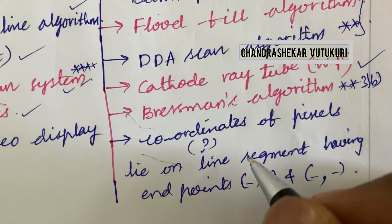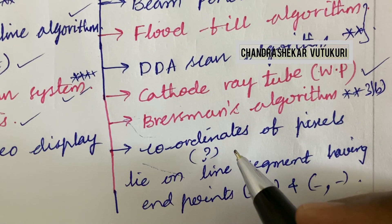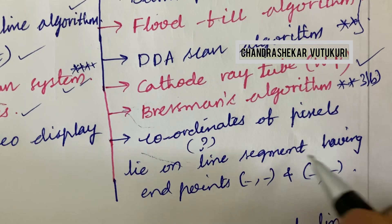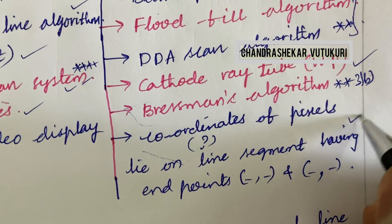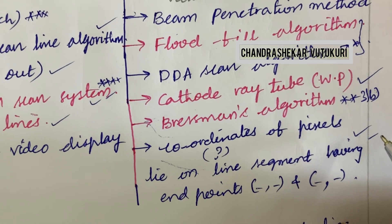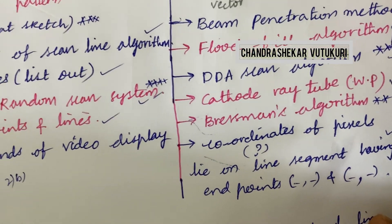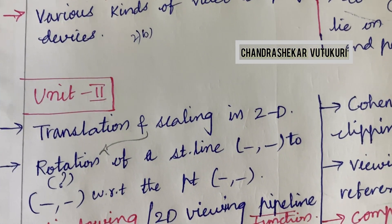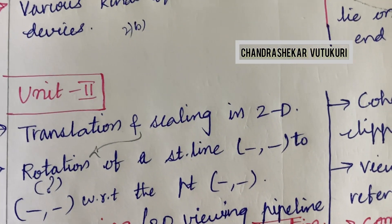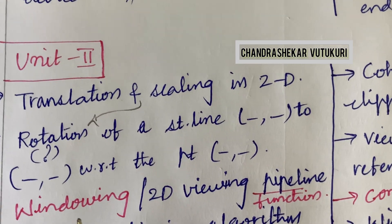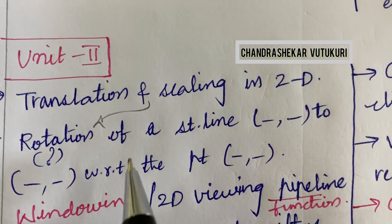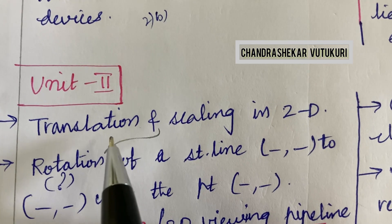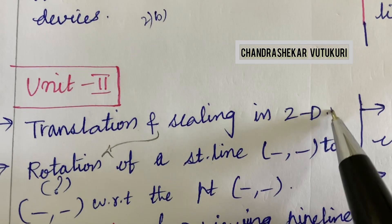Determine the coordinates of pixels lying on a line segment having given endpoints — this type of numerical problem may also be asked. Please write your exam neatly, concentrate on each and every part, and work out diagrams only in pencil, labeling them very neatly. Now let's jump into Unit 2.